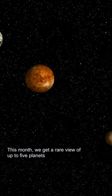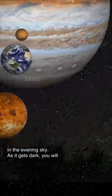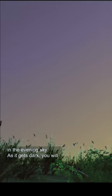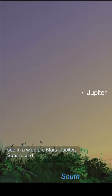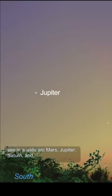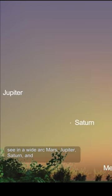This month, we get a rare view of up to five planets in the evening sky. As it gets dark, you will see, in a wide arc, Mars, Jupiter, Saturn, and Venus.